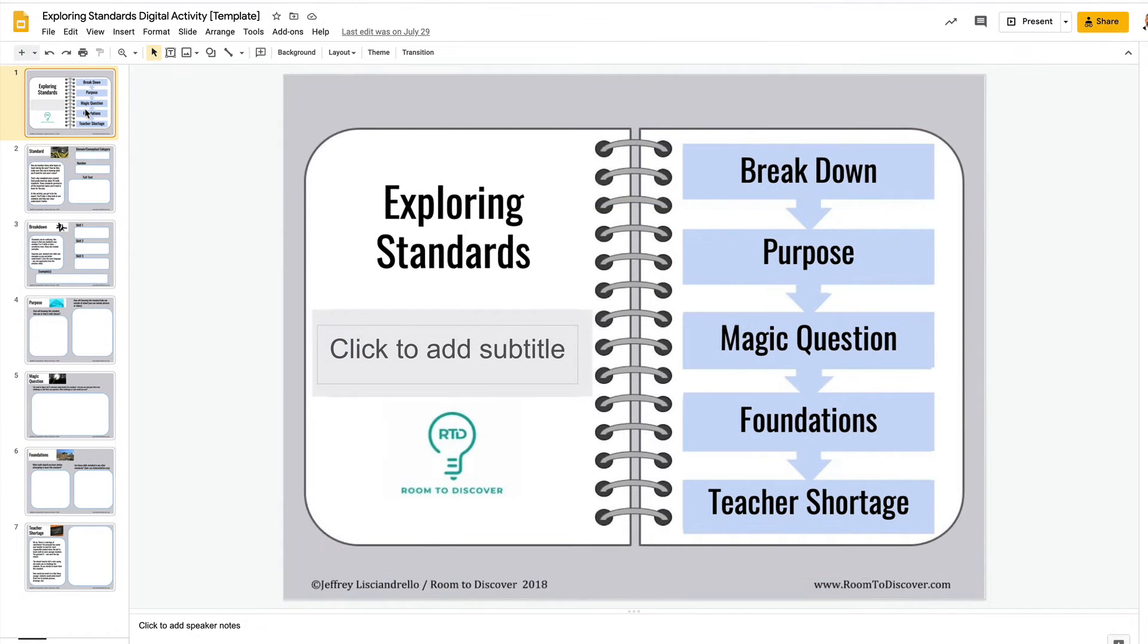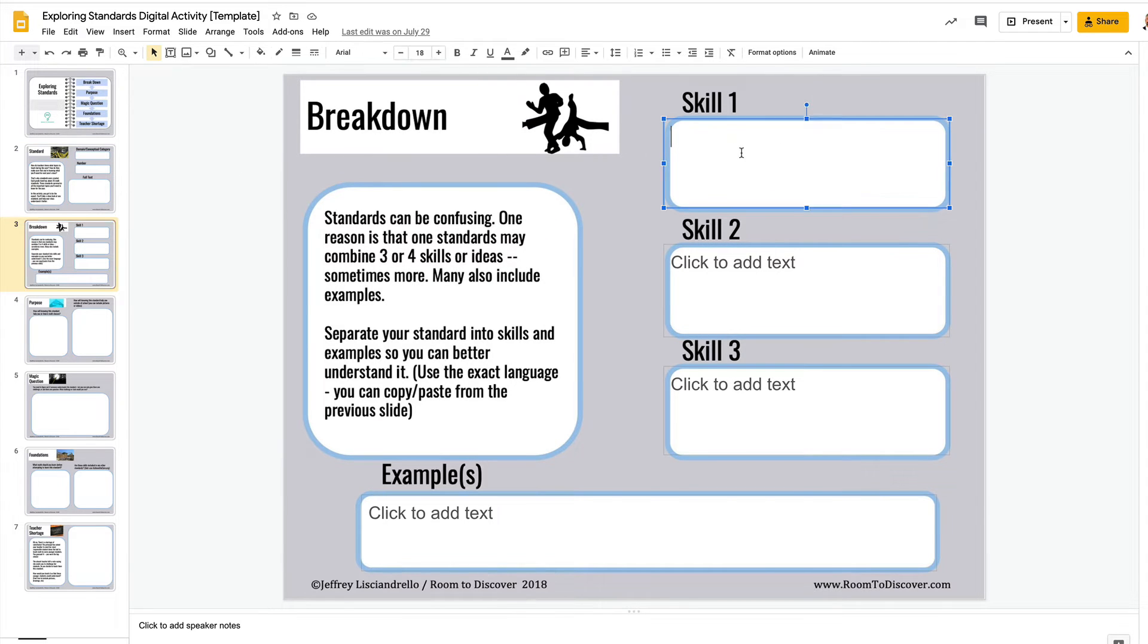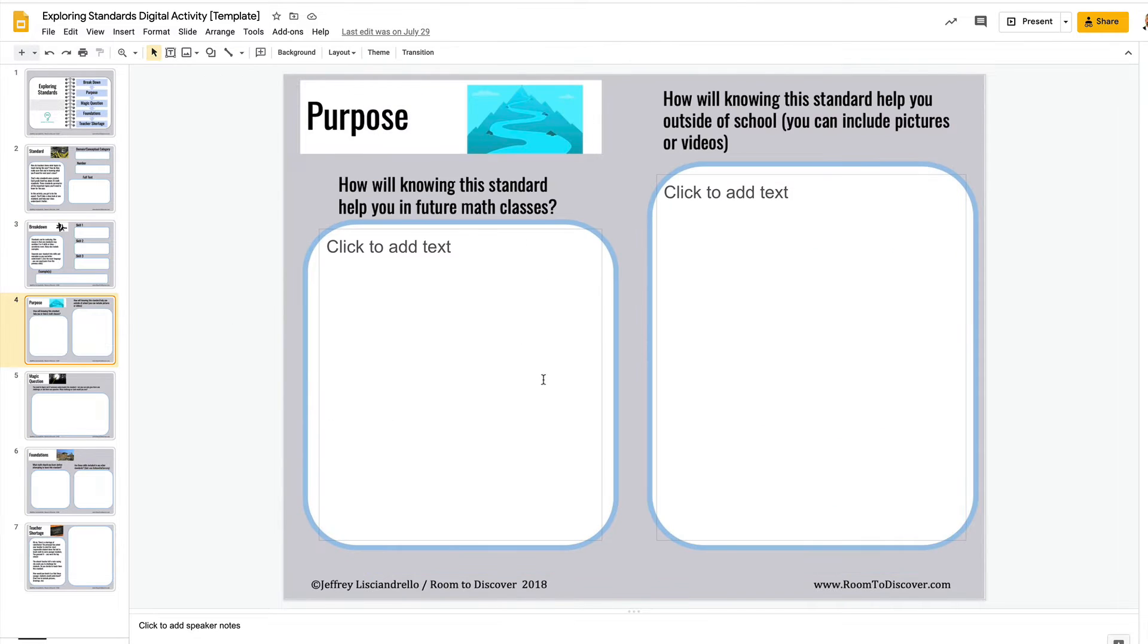And here's the exploring standards activity, which is possibly my favorite. It's also kind of the most outside the box. So it's different from anything that I've seen in most math classes. And the way it works is that we actually give students a standard. So we're explaining here what a standard is and then we give them the name of the standard, the text of the standard. And then they start by breaking it down. So they're going to separate the standard into parts to make it more easily understandable.